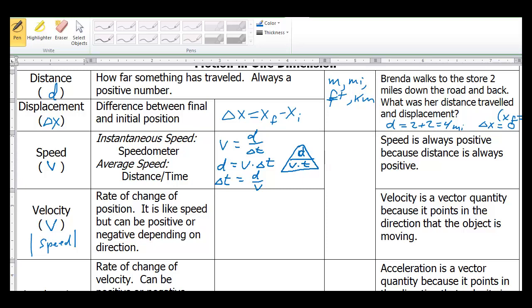Speed is always positive because distance is always positive. You're doing distance divided by time. If distance is positive, your speed will be positive. And just think of it as speed is just how fast you're going, regardless of whether you're going this direction or that direction.